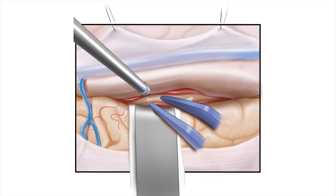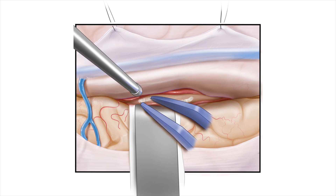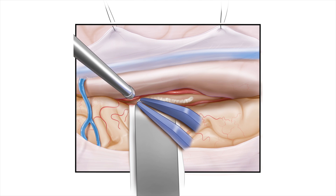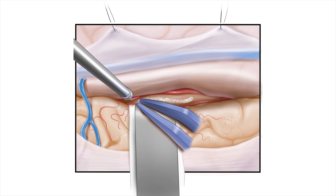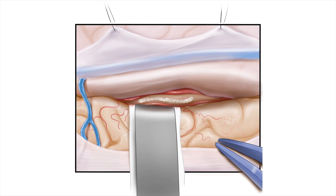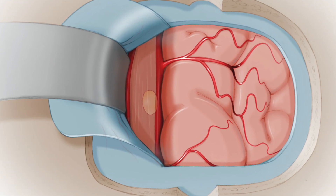Using gentle suction and electrocautery allows us to make an opening in the corpus callosum, known as a corpus callosotomy. Once this is performed, we can access the deepest parts of the brain, including the ventricular system. In part two, I'll take you with me into the operating room, where we perform this approach to remove a colloid cyst.